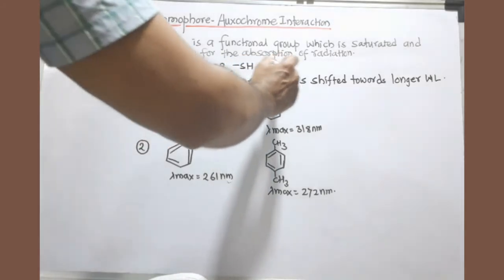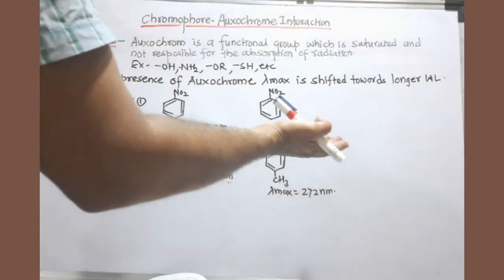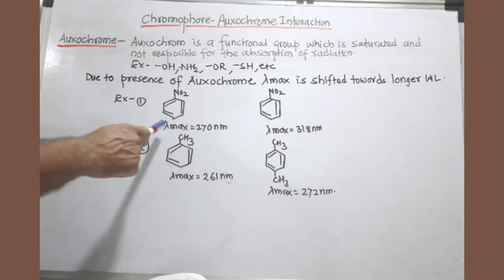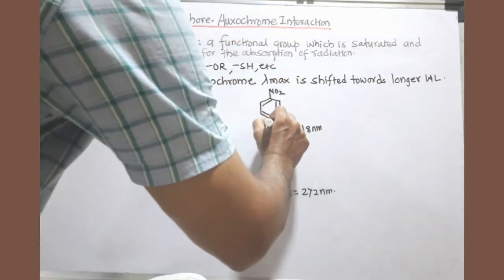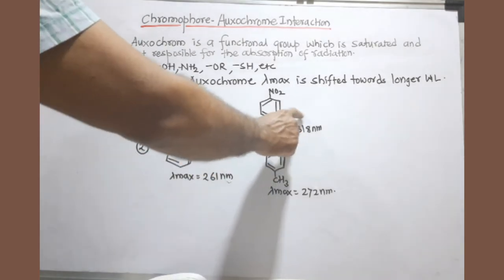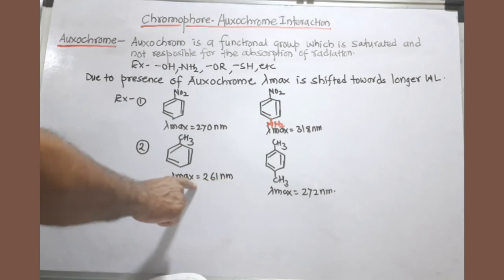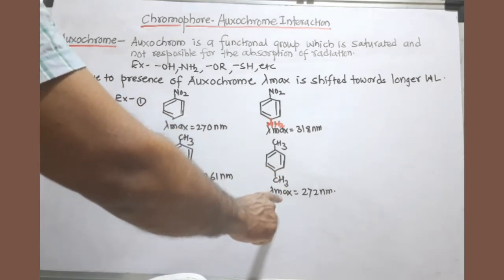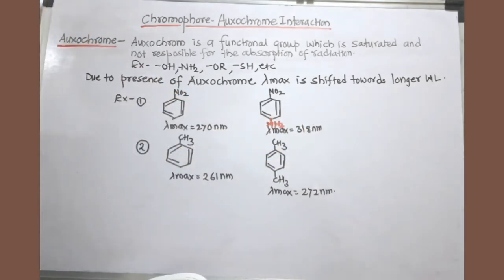When these auxochrome groups — such as any alkyl group or amino group — are joined to a double-bonded carbon, the lambda max value is increased, meaning it is again shifted towards longer wavelength. This is again a bathochromic shift. For example, nitrobenzene has lambda max at 270 nanometers, but when an amino group (NH2) is added, lambda max shifts to 318 nanometers. In the case of toluene, lambda max is 261 nanometers, but when another auxochrome in conjugation is added, it becomes 272 nanometers. So due to auxochrome-chromophore interaction, lambda max is shifted towards longer wavelength.